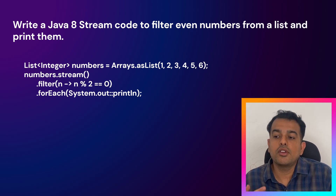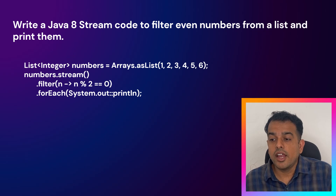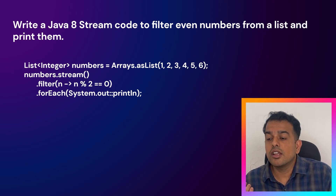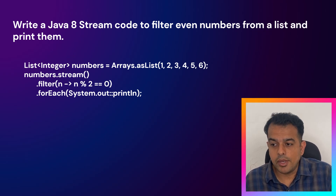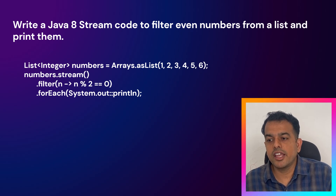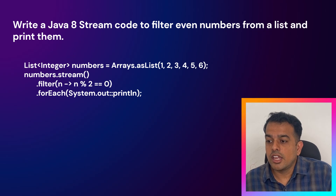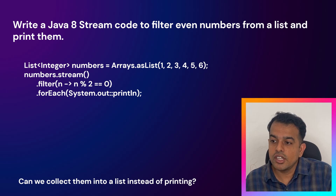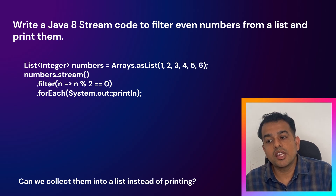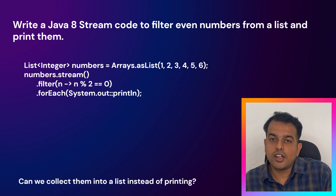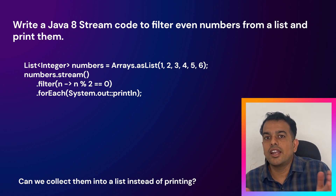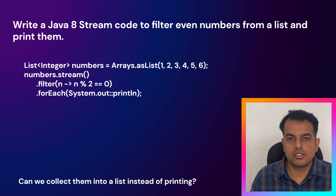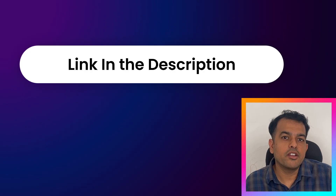There are multiple follow-up questions possible with Java 8 Stream API. For example, they might ask: can we collect the results into a list instead of printing? Instead of using forEach, you can use collect(Collectors.toList()) to collect the integers into a list.